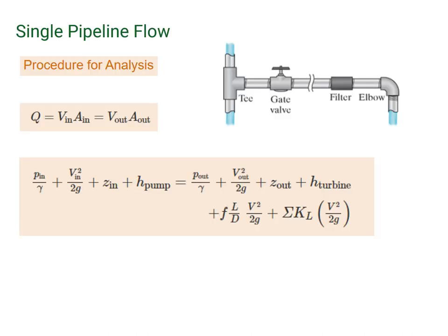To pull this all together, here's the procedure for analysis. We want to calculate Q. We know we have V_in times the area in equals V_out times the area out. Then we use the generalized energy equation where we add two terms.